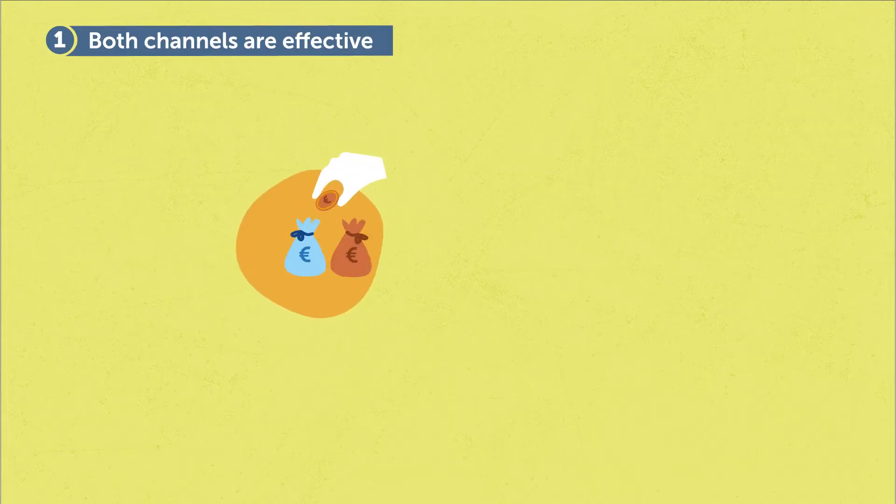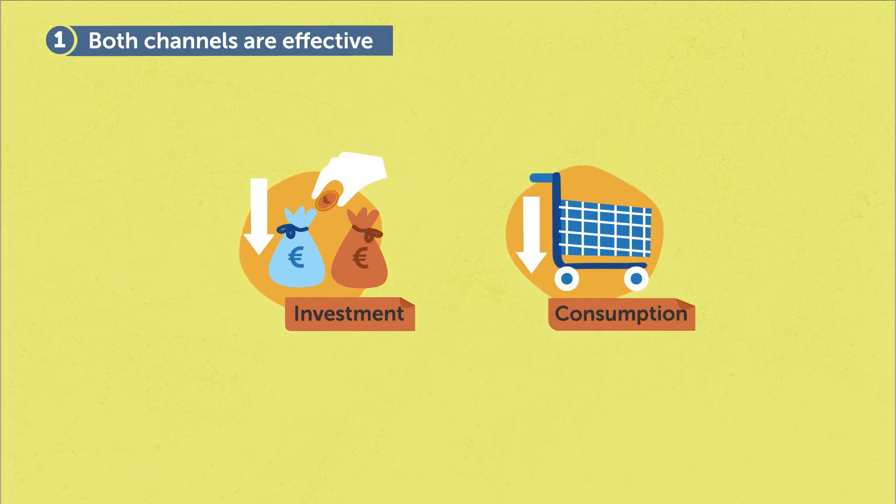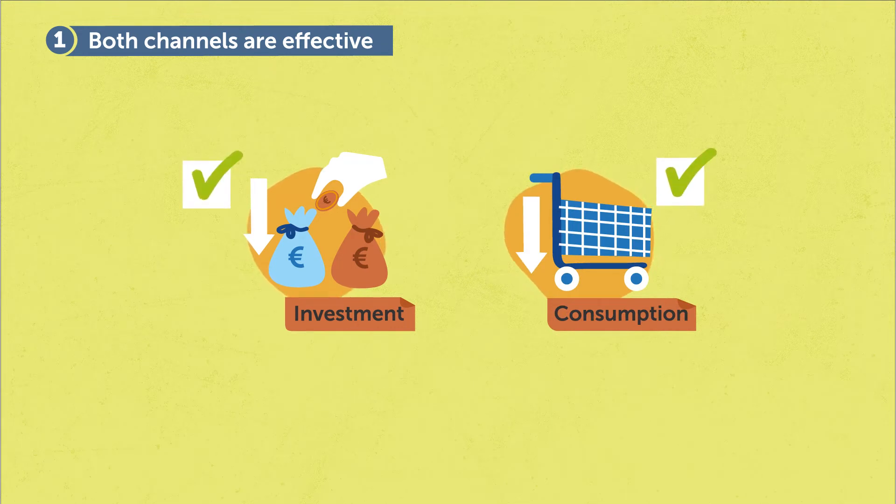What are the key findings? Our first finding is very robust, meaning it is not affected by the specific assumptions that we make in the model. And that is that both channels — reduction of investment and reduction in consumption — are both effective. But the size of the effect is different.